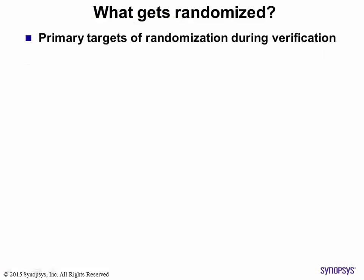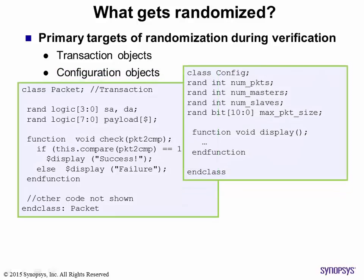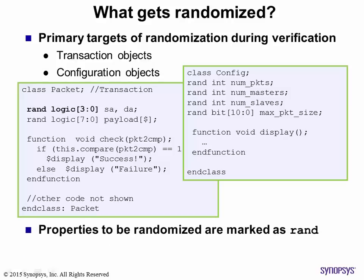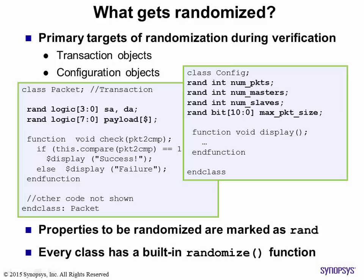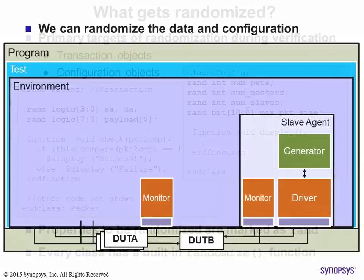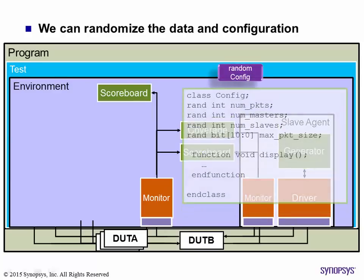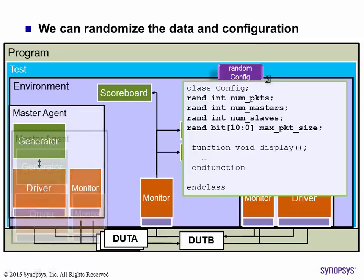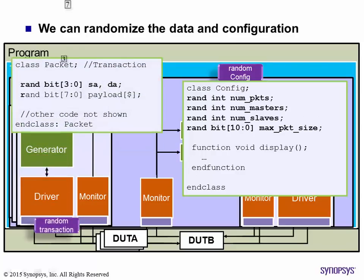So what do we want to randomize? Primarily transaction objects and configuration objects. All properties marked as rand in the class are randomized when the built-in randomize function is called on an object. Using randomize, we can create different configurations for each simulation run. Then we can generate random transactions to match the configuration.